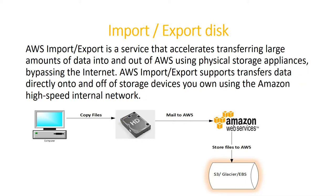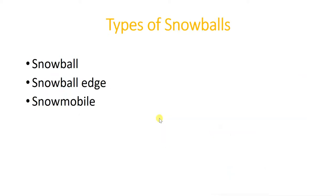It works like this: you connect a storage device, for example a hard disk, to the computer. Once you've completed the copying, you mail it to AWS, and AWS will upload those files to AWS storage — it can be either S3, Glacier, or EBS, depending on how you want it.